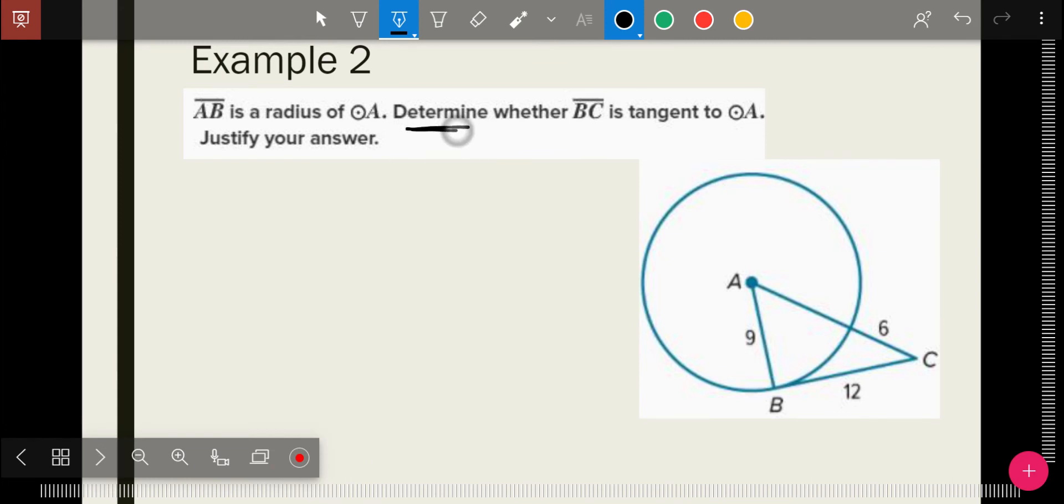Questions like this that say determine and justify, mean that they don't know. They're not saying yes, it's a tangent. The question is basically asking, is it tangent question mark? And I know that if it is tangent, this is perpendicular, because that's a radius. So if the answer is yes, that's perpendicular, which would make this a right triangle. And so I can do A squared plus B squared equals C squared. And then if it's true, if that works out, then it's yes, it's tangent. If it's not true, then it's no, it's not tangent.